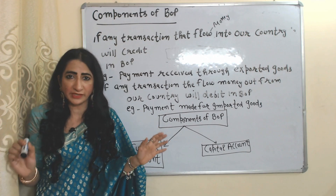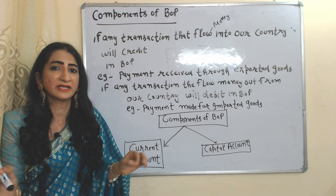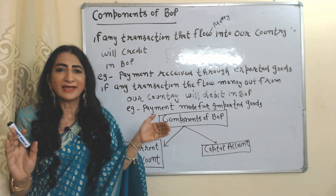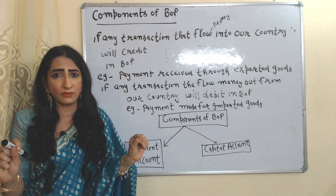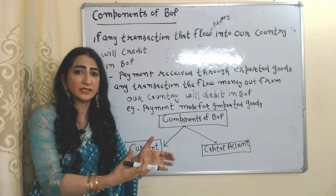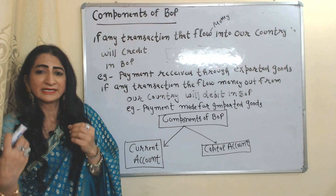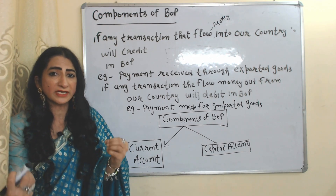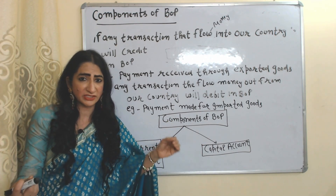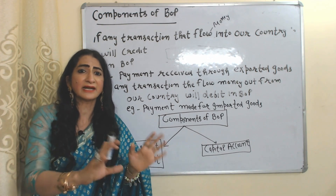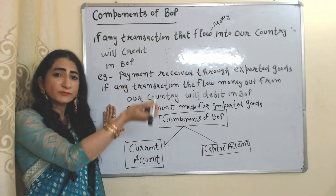Now we will see the components of Balance of Payment. Balance of Payment keeps a record of transactions. Any transaction that flows money into our country will be credited in the Balance of Payment account. For example, when we export goods, we receive money — money is flowing into our country — so payments received through exports are credited.